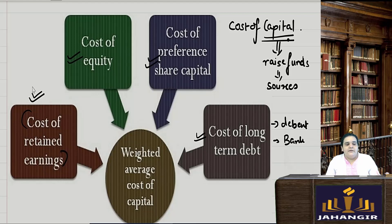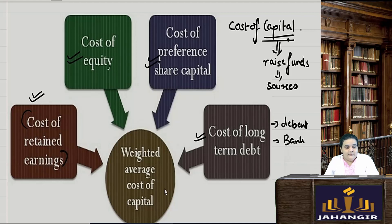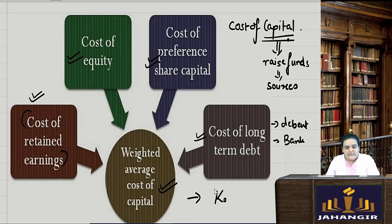When capital is taken from more than one of these sources and the total cost of capital is calculated with the help of weights, we term that as the Weighted Average Cost of Capital, which is denoted by the alphabet K — the cost of overall capital.